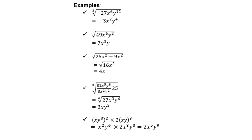For (xy cubed) to the power 2, remember the laws of exponents: it is x squared because x times x is x squared, and y cubed times y cubed is y to the power of 6. For the next one, you must first cube xy before you multiply by 2. So xy times xy times xy, then times 2, is 2x cubed y cubed. Multiplying those two together gives 2x to the power 5 y to the power 9.